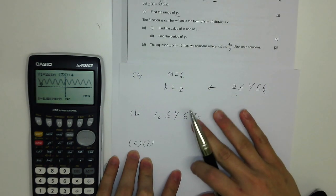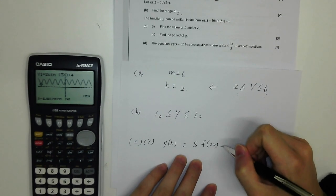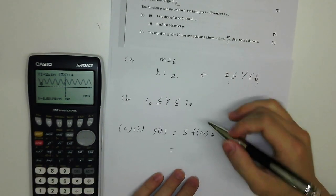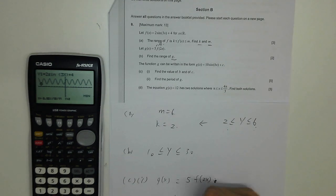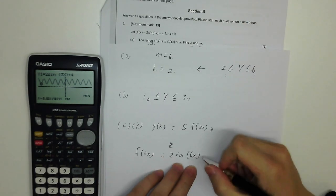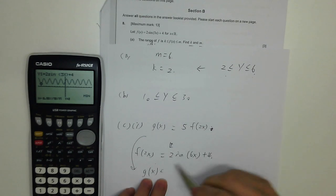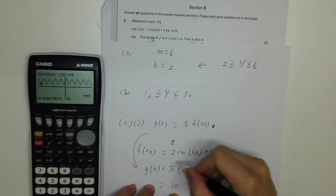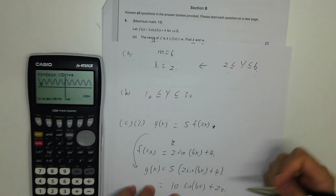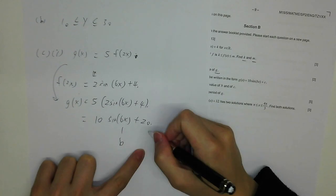Part C1: the function g can be written in the form g(x) = 10sin(bx) + c. Find b and c. So g(x) = 5f(2x). Find f(2x) by replacing x with 2x: 2sin(3×2x) + 4 = 2sin(6x) + 4. So g(x) = 5 × (2sin(6x) + 4) = 10sin(6x) + 20. So the value of b is 6 and the value of c is 20.